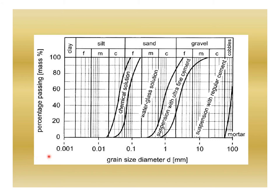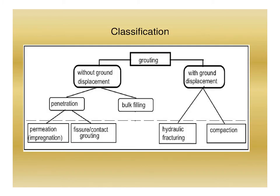Here you can see the grain size distribution chart showing different options: suspension with regular cement, suspension with ultrafine cement, water glass solution, and chemical solution. If the soil falls in the finest region, chemical solution will be the viable option. If the material falls in the next region, water glass solution is appropriate. If the soil falls in the coarser region, suspension with ultrafine cement is more viable, and for the coarsest soils, suspension with regular cement is used.